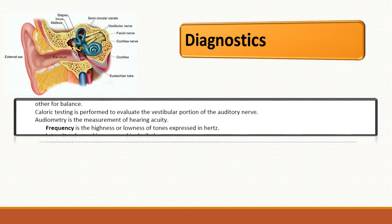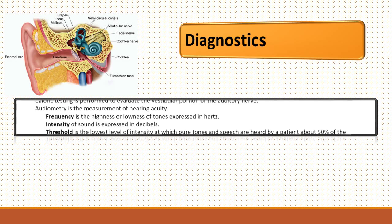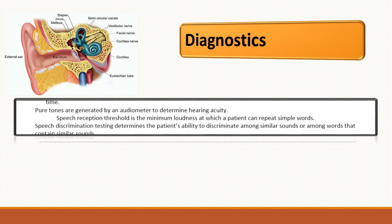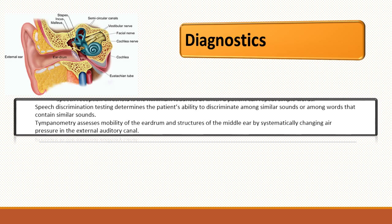Caloric testing may be done to evaluate the vestibular portion of the auditory nerve. All these tests are covered well in your textbook — if you're not familiar with them, look them up. Audiometry is a measurement of hearing acuity. There may also be speech discrimination testing to see if the patient is able to discriminate among similar sounds or words that contain similar sounds. Tympanometry measures the mobility of the eardrum and structures of the middle ear, and that's also helpful.